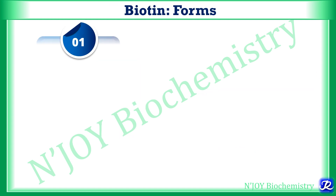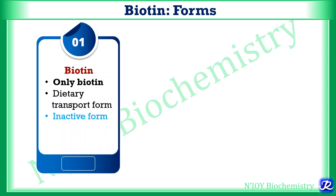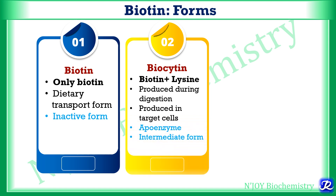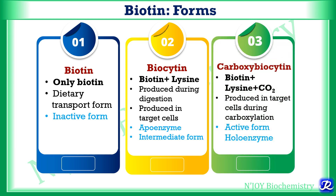There are three forms of biotin. The first is biotin itself — it is the dietary form as well as transport form of biotin and it is the inactive form. The second form has lysine along with it and is called biocytin; it is produced during digestion of biotin and in target cells, and is the apoenzyme form — an intermediate form. The third form is carboxybiocytin, which has biotin plus lysine plus carbon dioxide, produced in the target cell during carboxylation reactions. It is the active form of biotin and is called the holoenzyme.